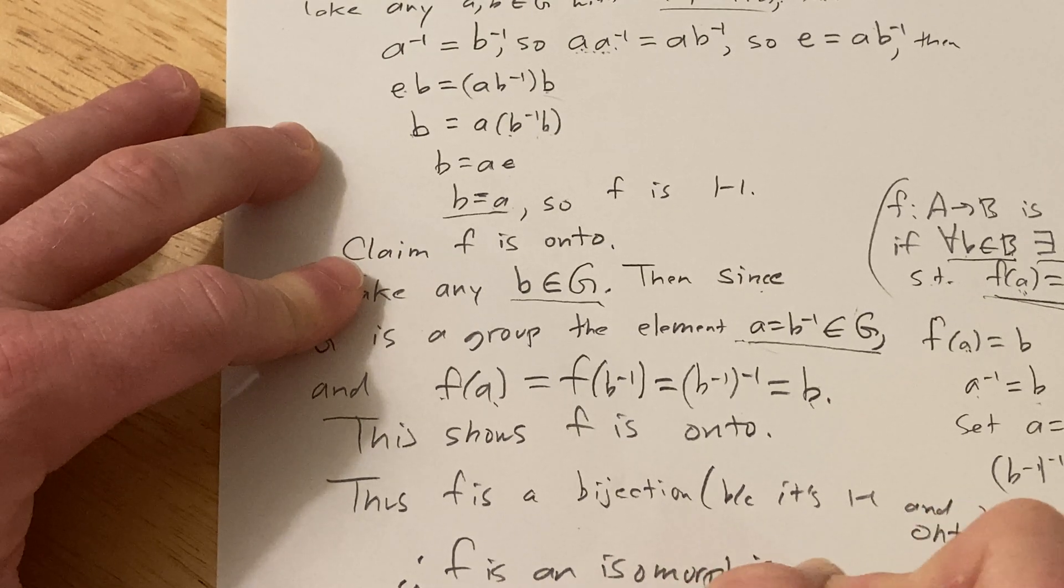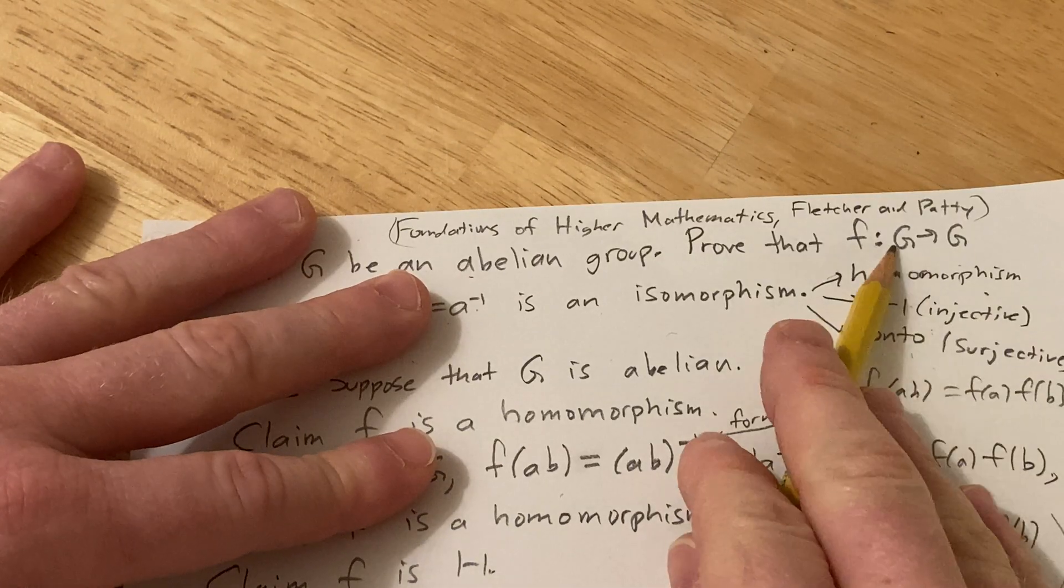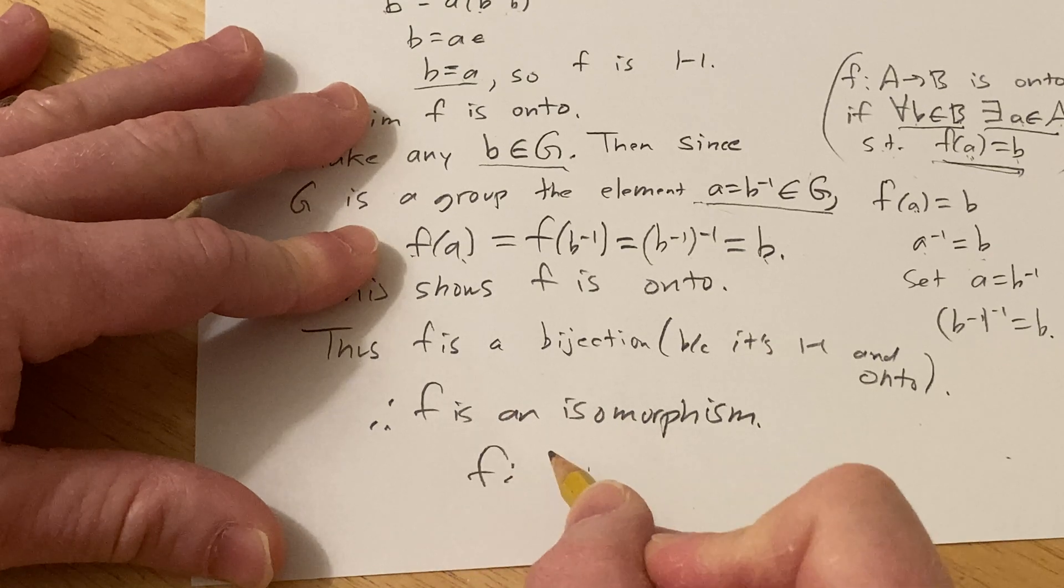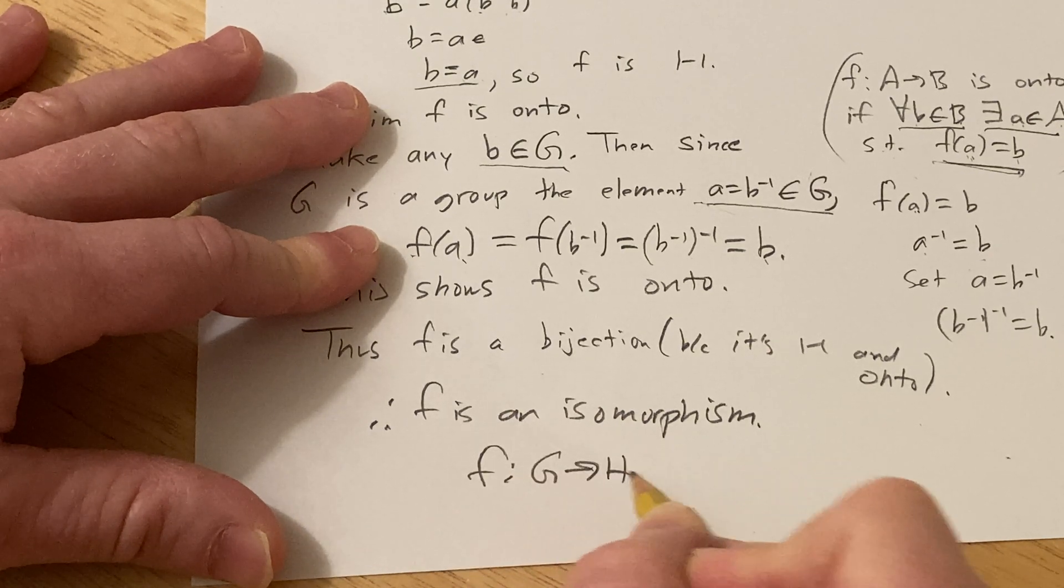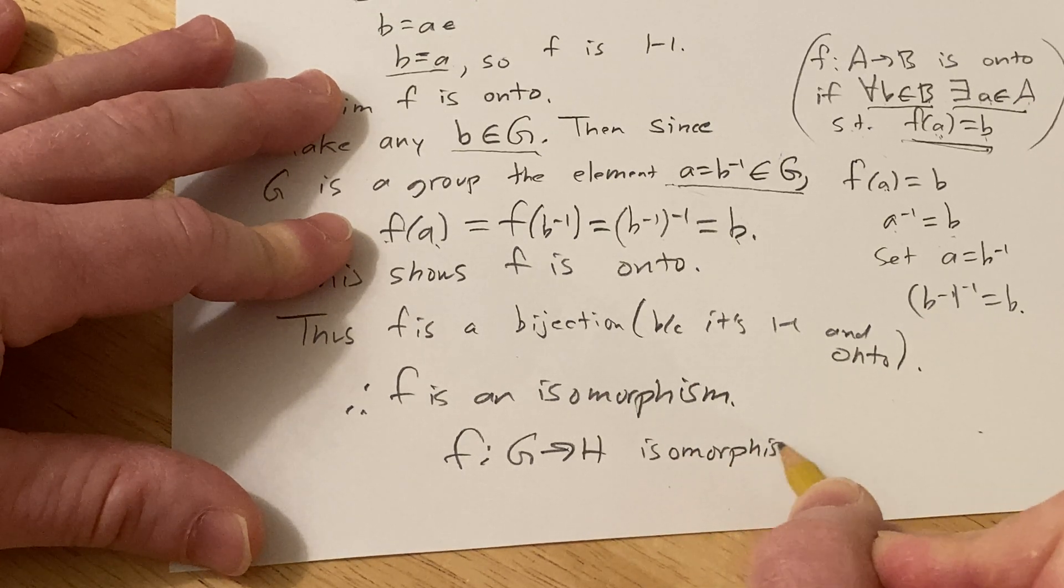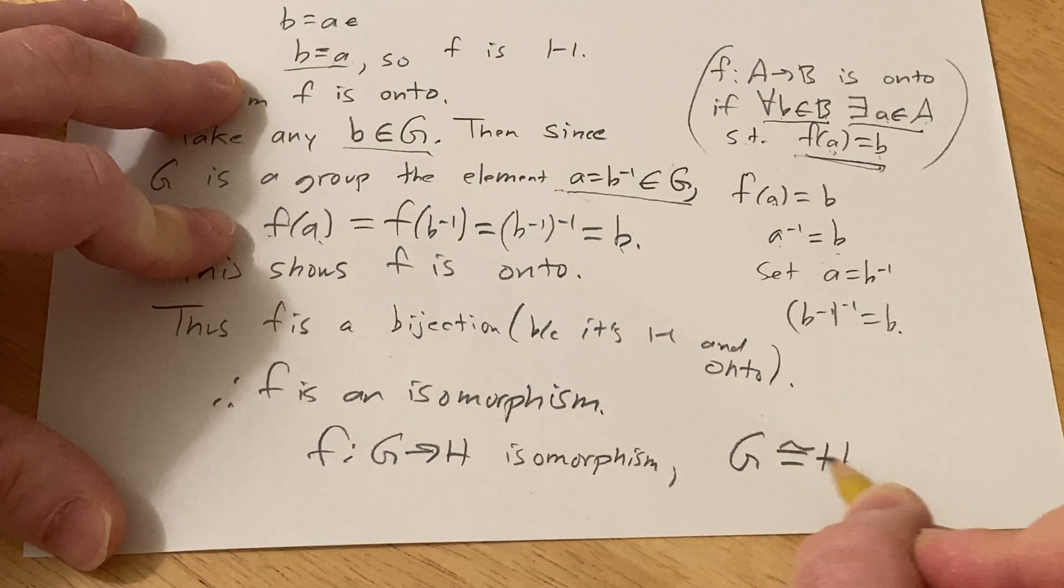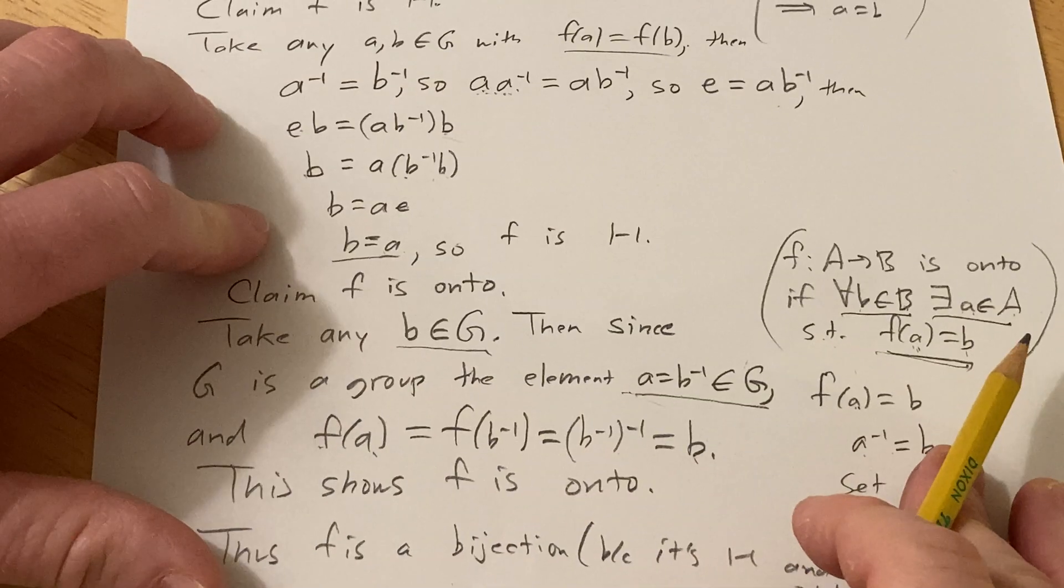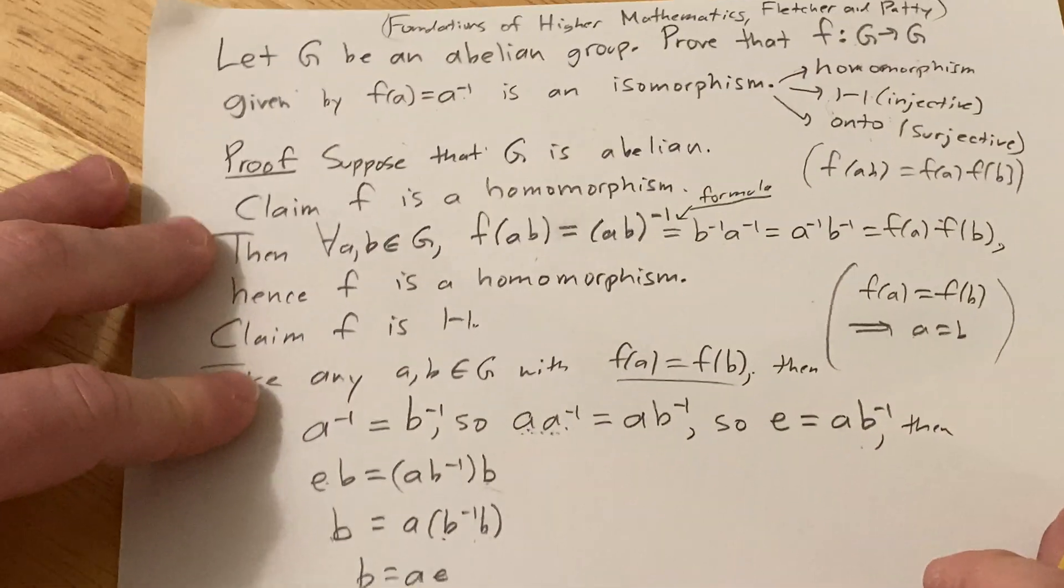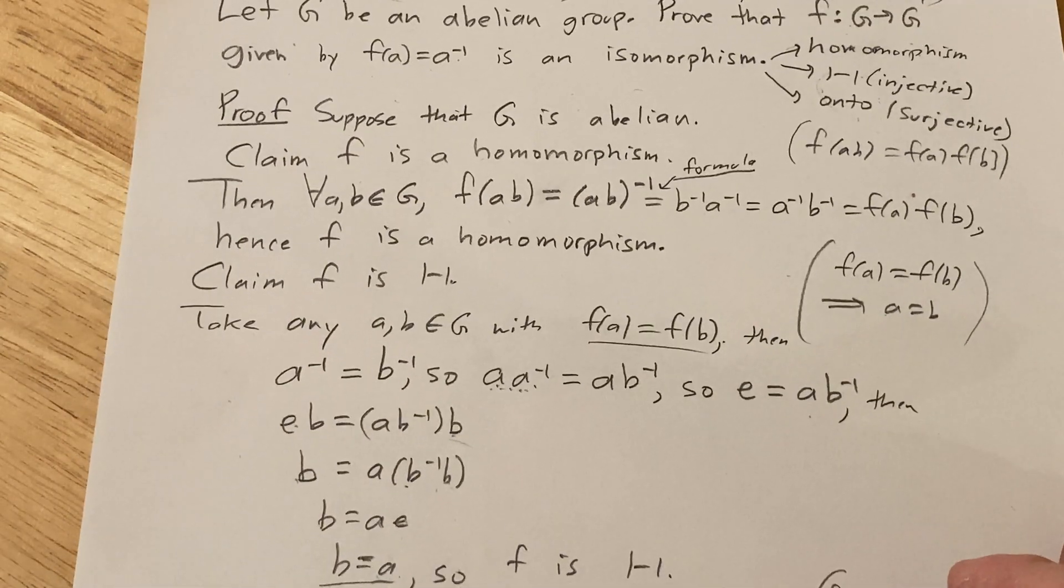So whenever you have an isomorphism between groups, you see that the groups are isomorphic. So in this case it was the same group, it was G and G. But like if you had a different group, like say you had f from G to H and then this was an isomorphism, like you show that this is an isomorphism, then you would say G is isomorphic to H and they're basically the same group. So yeah, so that's it. Hopefully this has been helpful to someone out there in the world. Yeah, good luck and take care. Thank you.